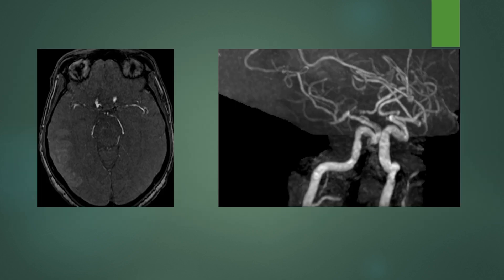On vascular imaging, you want to see where the MCA is occluded or narrowed. On the axial source images, follow the M1 segments to the bifurcation or trifurcation within the sylvian fissure. In this case, there is bifurcation on the left; on the right you see two branches, but one ends. On the MIP images, there is an abrupt cutoff of a right M2 branch, specifically the posterior branch.